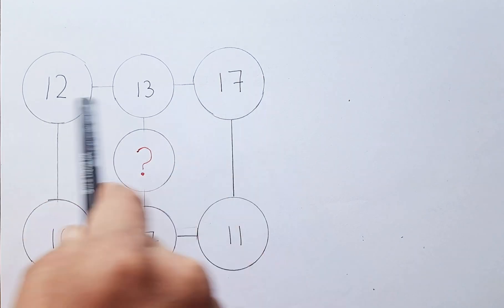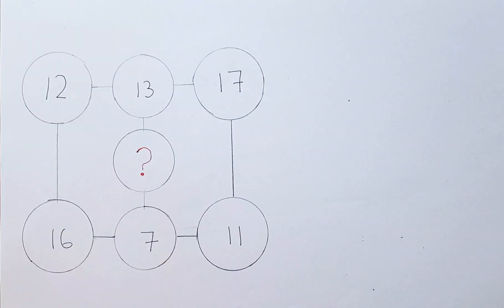It doesn't make sense if you add or multiply the numbers horizontally. 12, 13, 17 and 16, 7, 11. If you multiply or add, it doesn't make any sense.